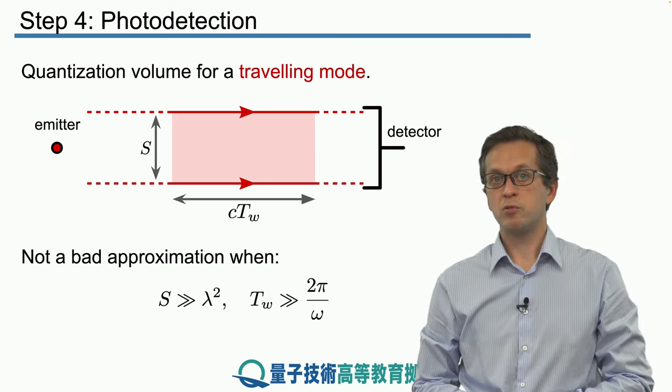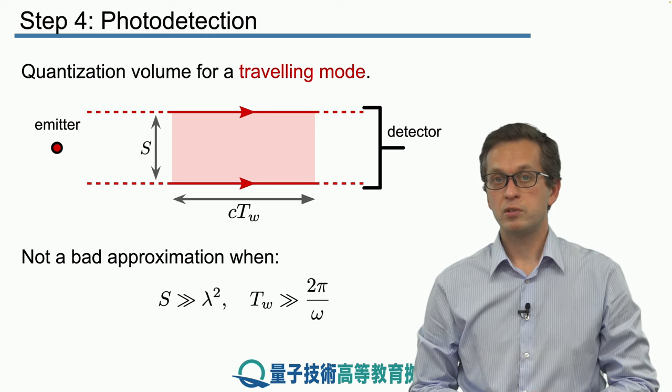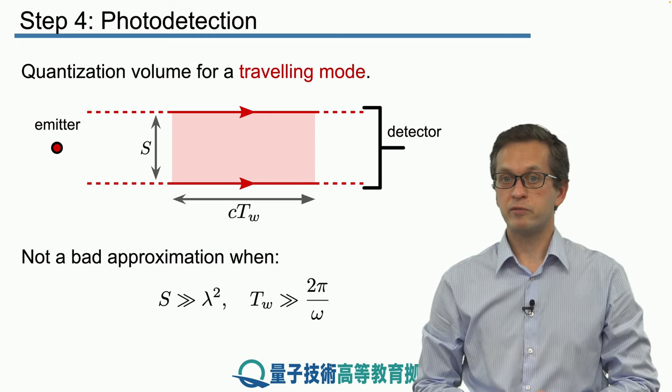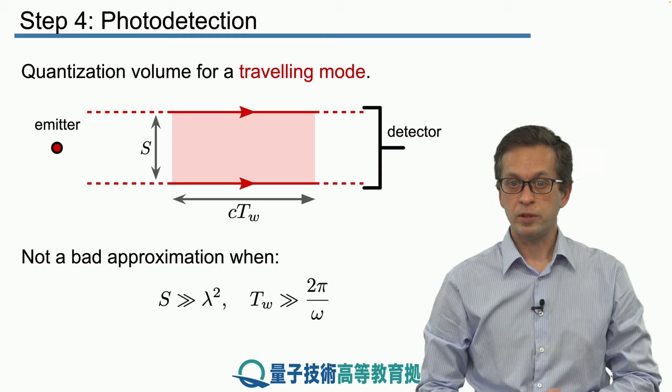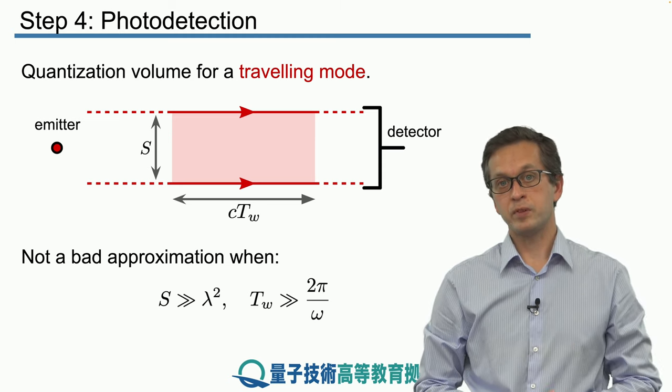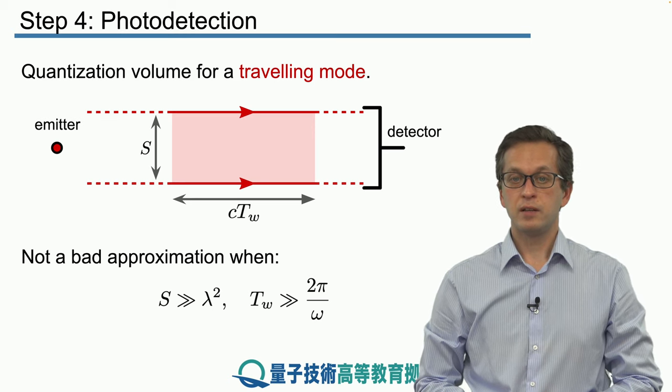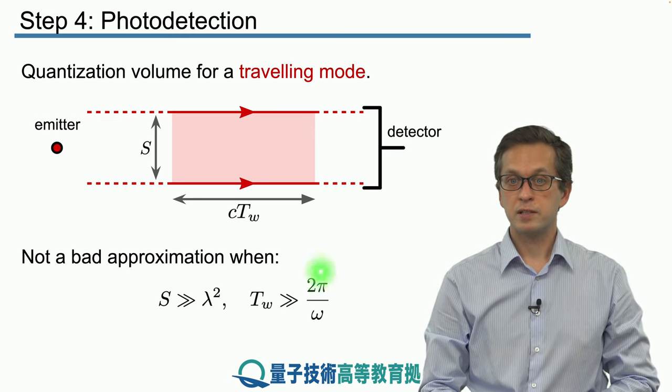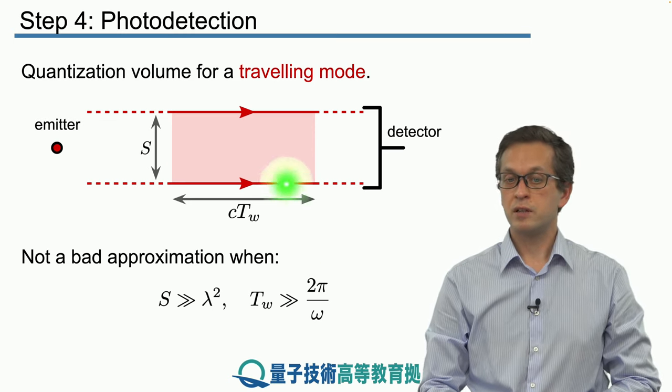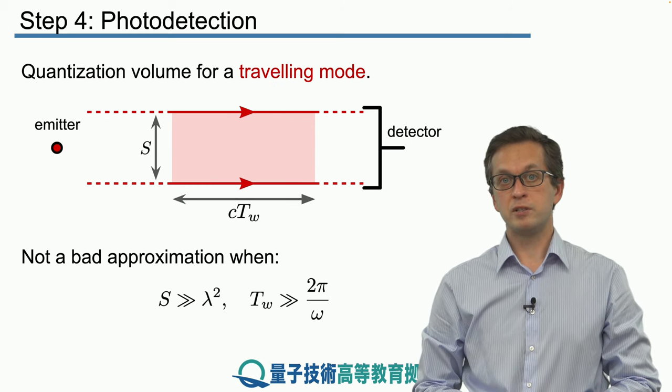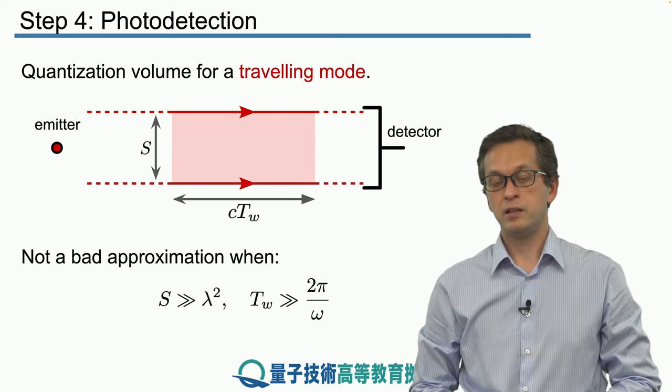In many scenarios in quantum communications, where we use light of photons of particular frequency and width of a particular dimension, these two conditions are satisfied. And we will see how this approximation simplifies a lot of the calculations that we're going to do in this and next lessons.